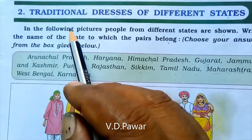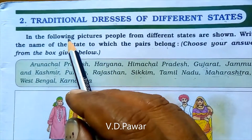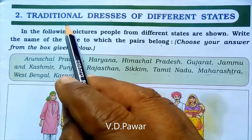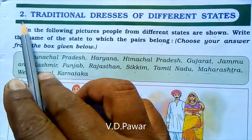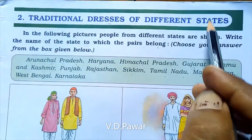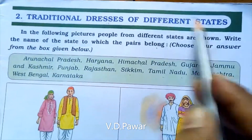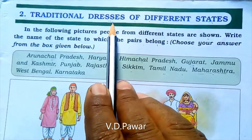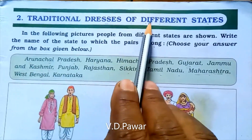Dear students of Standard 4, today we are learning GK — our favorite subject, General Knowledge. We are reading Lesson Number 2: Traditional Dresses of Different States. Vibhinna rajyokhe paramparik paridhan — traditional dresses of different states.